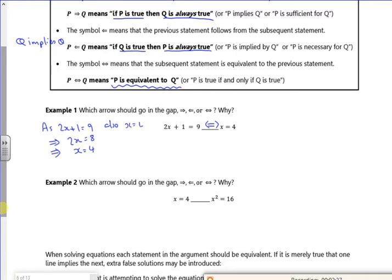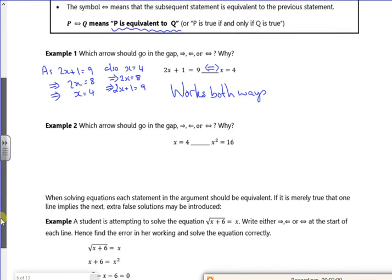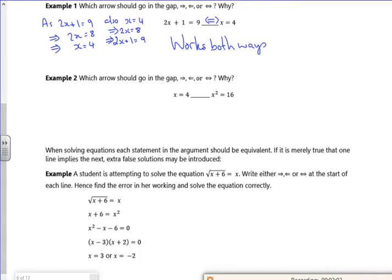I could double it to get 8 and then I could add on 1 to get 9. So these lines are also implied by the ones before them. So if it works both ways, I'm okay there.